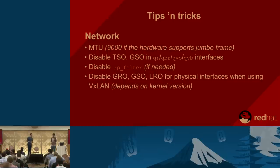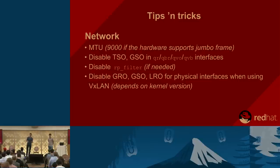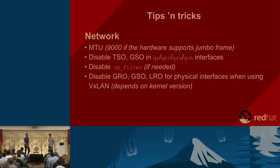Another issue involved north-south and east-west traffic. North-south is when you're inside a VM and want to do something like a 'yum update' — it will be very slow. East-west is the communication between instances and computes. To fix these issues, you need to disable the TSO and GSO flags on the QR, QBR, QVO, and QVB interfaces.